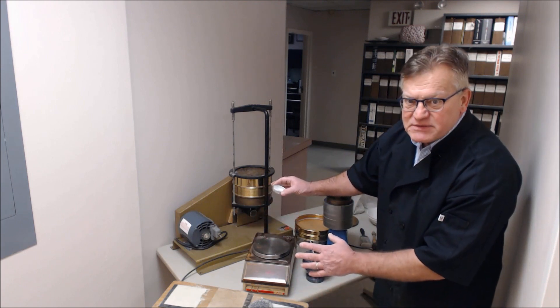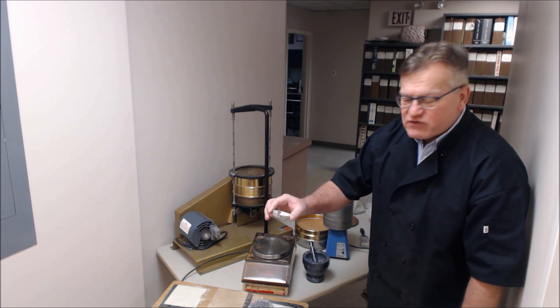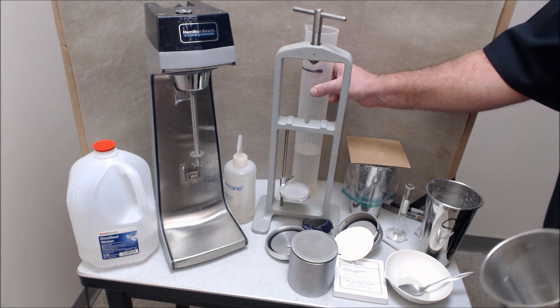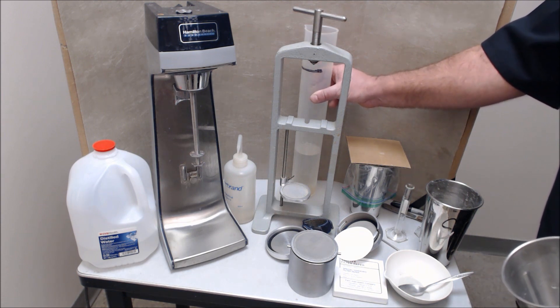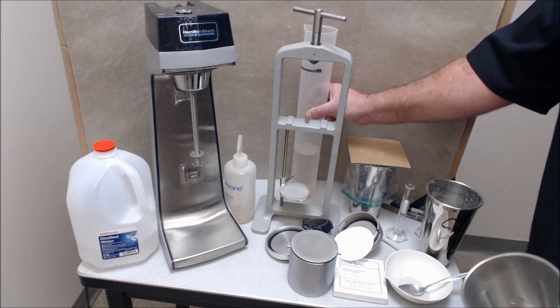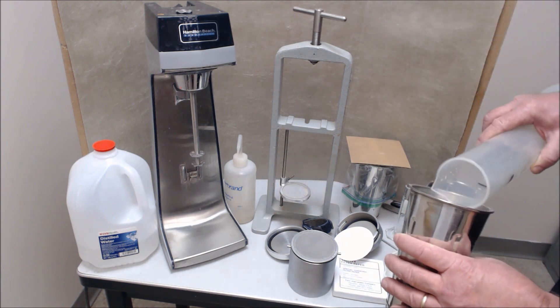This exact specimen preparation will be done for fluid loss as well as for swell index. You've prepared your specimen by sieving it through 100% passing the 100 and 65% passing the number 200. Now you have to make the gel of the material.